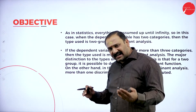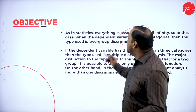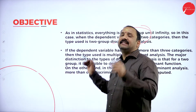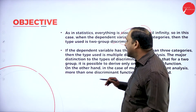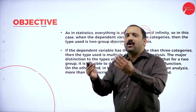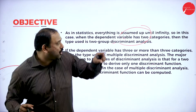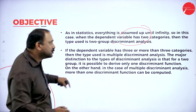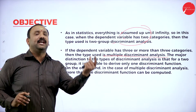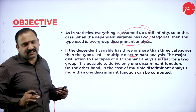In statistics, everything is assumed up to infinity. In this case, when the dependent variable has two categories, this is used under the two-group discriminant analysis — there are two ways of analyzing the factor. If the dependent variable has three or more categories, we use multiple discriminant analysis, because there are different variations altogether and multiple factors are playing a role in the analysis.